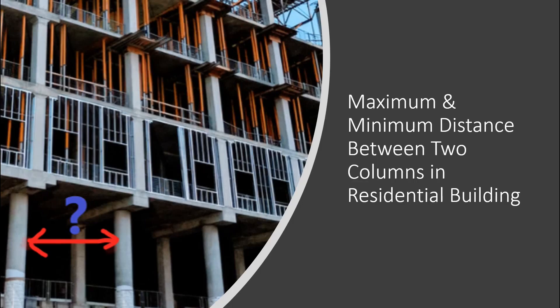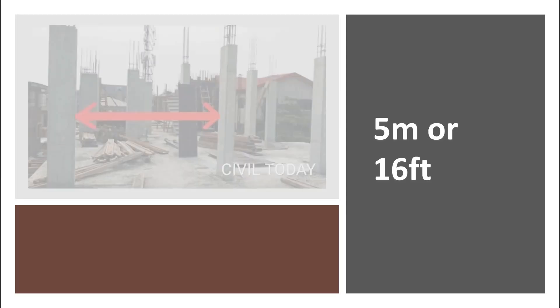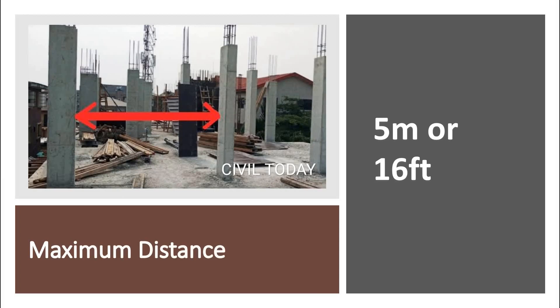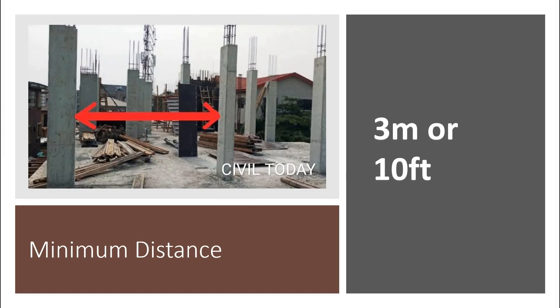First we will see what should be the maximum and minimum distance between two RCC columns in a residential building. For ground floor, G plus 1, and G plus 2 storeys, the maximum distance between two columns should be 5 meters or 16 feet. If the spacing is greater than 5 meters, the column size should be increased and the column may fail to take the load coming from the structure. So the maximum distance should be 5 meters, and the minimum distance between two RCC columns should be 3 meters or 10 feet.